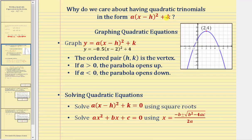For example, if we wanted to graph the equation Y equals A times the quantity X minus H squared plus K, just by inspecting the equation, we can get a lot of information about the graph of the function. The sign of A indicates whether the graph opens up or down — if A is positive, the parabola opens up, and if A is negative, the parabola opens down. Notice here A is equal to negative 0.5, and the parabola opens down.